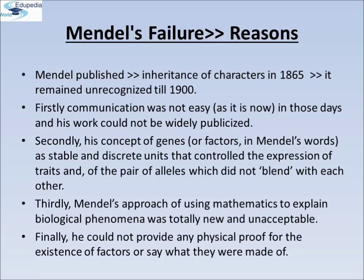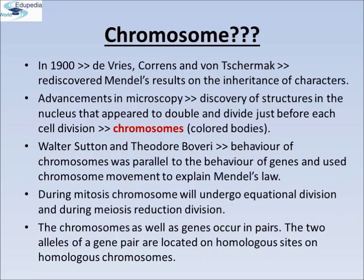Chromosomes. In 1900, three scientists — de Vries, Correns, and von Tschermak — independently rediscovered Mendel's results on inheritance of characters. Also by this time, due to advancements in microscopy, scientists were able to carefully observe cell division. This led to the discovery of structures in the nucleus that appeared to double and divide just before cell division. These were called chromosomes, or colored bodies, as they are visualized by staining. By 1902, the chromosome movement during meiosis had been worked out. Walter Sutton and Theodor Boveri noted that the behavior of chromosomes was parallel to the behavior of genes and used chromosome movement to explain Mendel's laws.